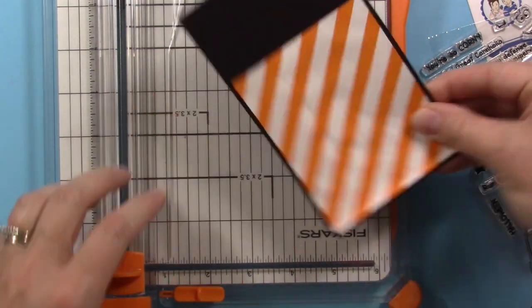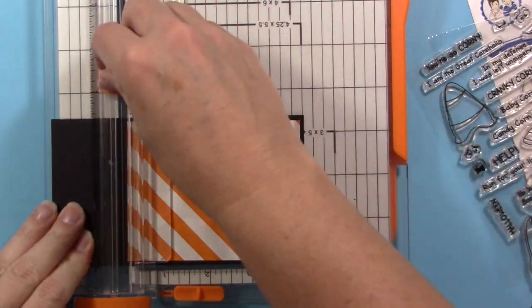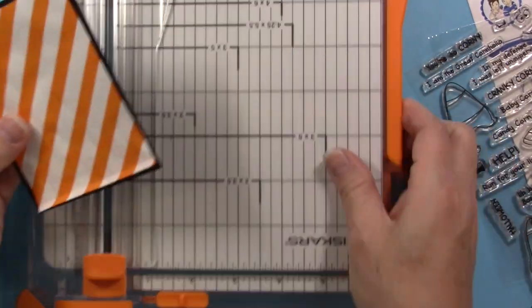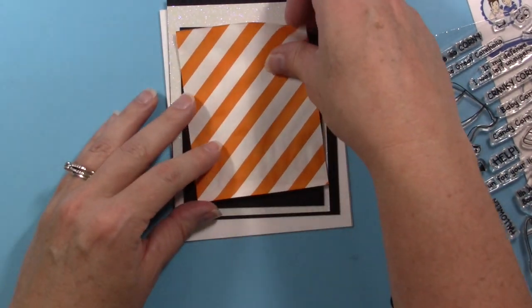I'll often do this kind of layering with papers where I just stick it into my paper cutter and line it up so that it's about right. Now I'm going to stamp out some of the cute little candy corns.